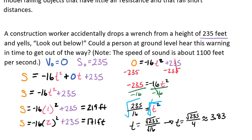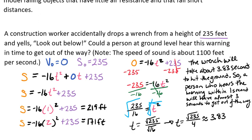What does that mean in relation to our problem? Is the person going to hear the warning before it hits them? The wrench will take about 3.83 seconds to hit the ground. A person who hears the warning within one second will have almost 3 seconds to get out of the way. So the answer is yes, because we know that if the worker yells that, it's only going to take less than a second for the sound to reach whoever's down below.